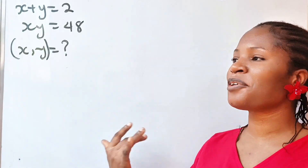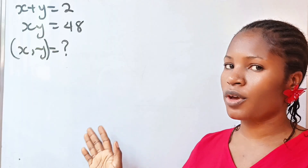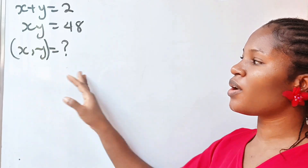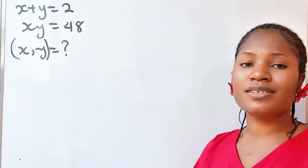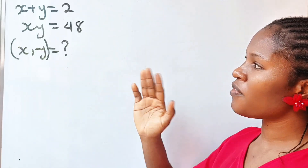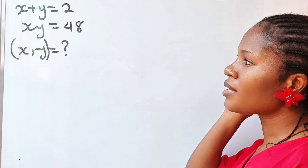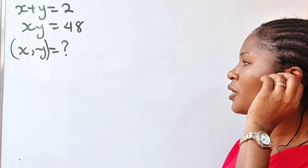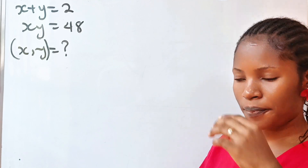Welcome back to the channel. This is an amazing algebra question and I would like you to watch to the end and see how we prove that the answer we got is correct. Especially if this is the first time you are coming across this channel. The equation says that if x plus y is equal to 2 and x multiplied by y is equal to 48, we should find the value of x and y.